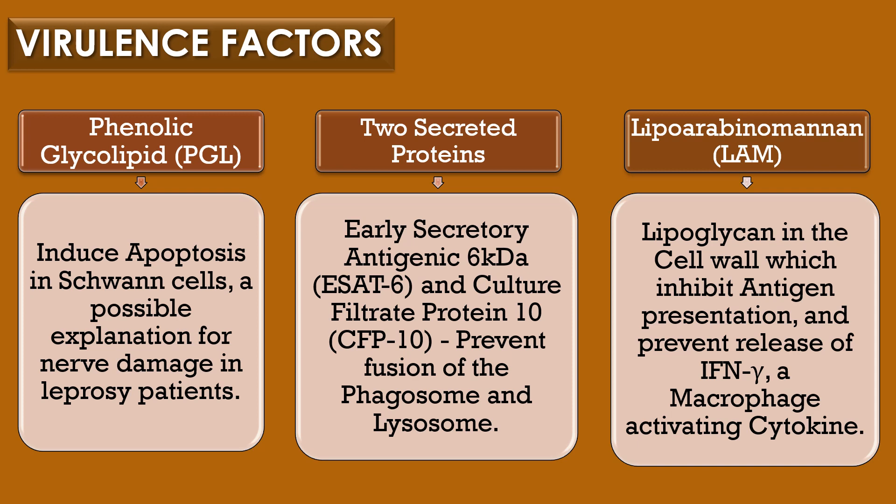Schwann cells are the cells in the peripheral nervous system that produce the myelin sheath around the neuronal axons. The second virulence factor is two secreted proteins: early secretory antigenic 6 kDa protein and culture filtered protein 10. These secreted proteins prevent the fusion of the phagosome and lysosome, enabling mycobacteria to survive within immune cells. The third virulence factor is lipoarabinomannan or LAM, a lipoglycan in the cell wall which inhibits antigen presentation and prevents the release of interferon gamma, a macrophage activating cytokine.